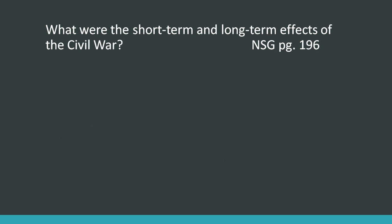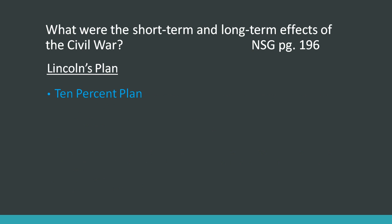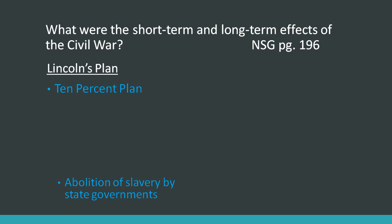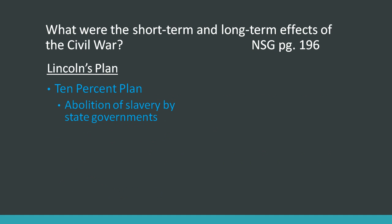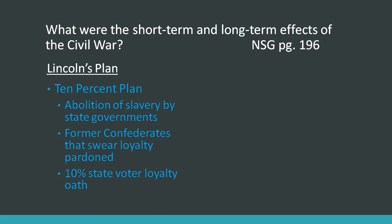There were a couple of different people who came up with ideas of how to rebuild or reconstruct the South. First, we had Lincoln's Plan, known as the 10% Plan. It included abolition of slavery by state governments, pardons for former Confederates who swore loyalty, and once 10% of a state's voters took a loyalty oath, the state would be readmitted into the political process.